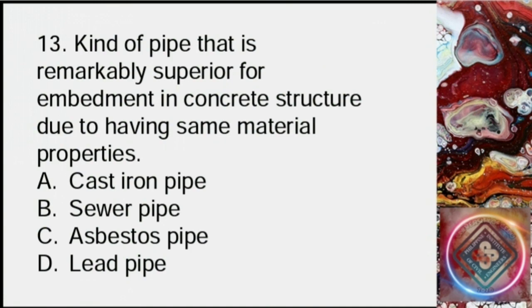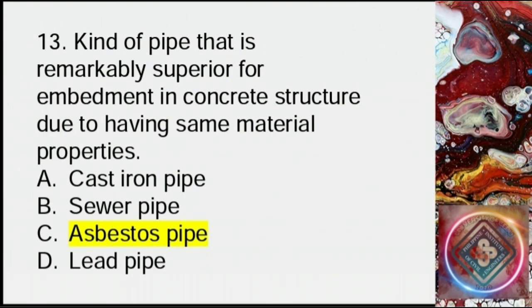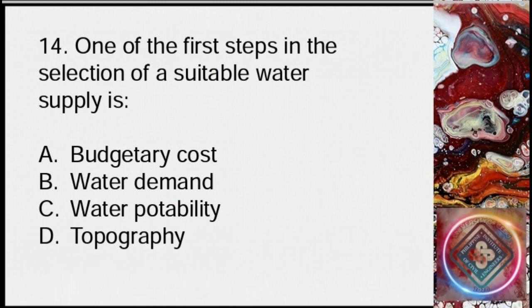Question 13: Kind of pipe that is remarkably superior for embedment in concrete structure due to having same material properties. A: Cast iron pipe, B: Sewer pipe, C: Asbestos pipe, D: Lead pipe. Answer: C, asbestos pipe.